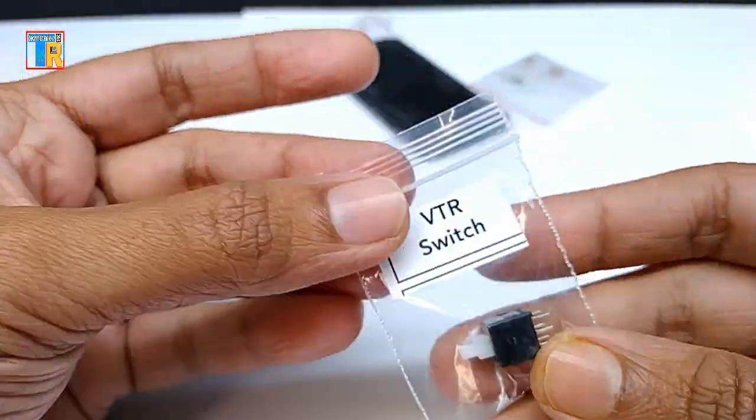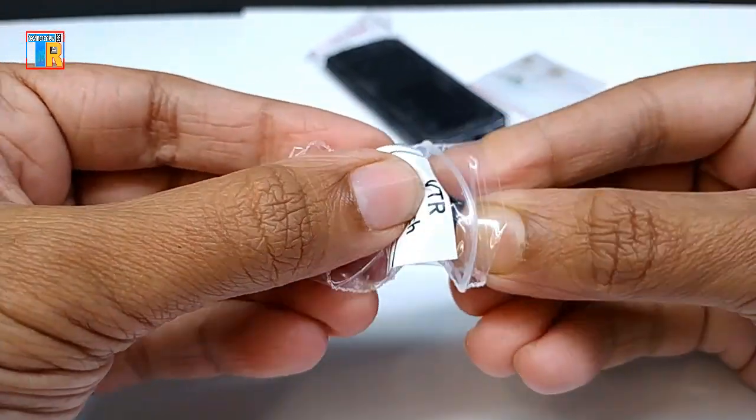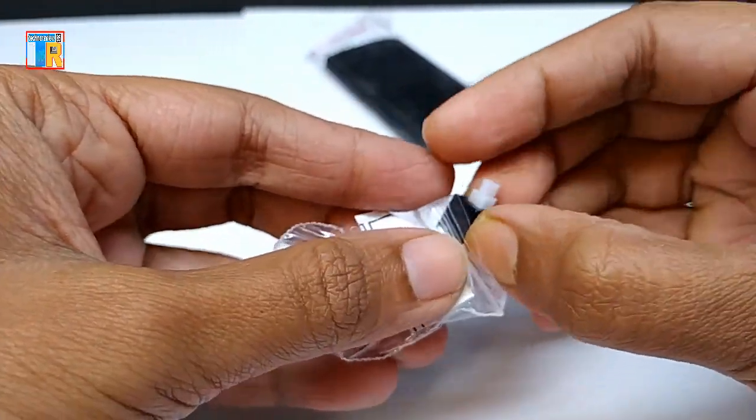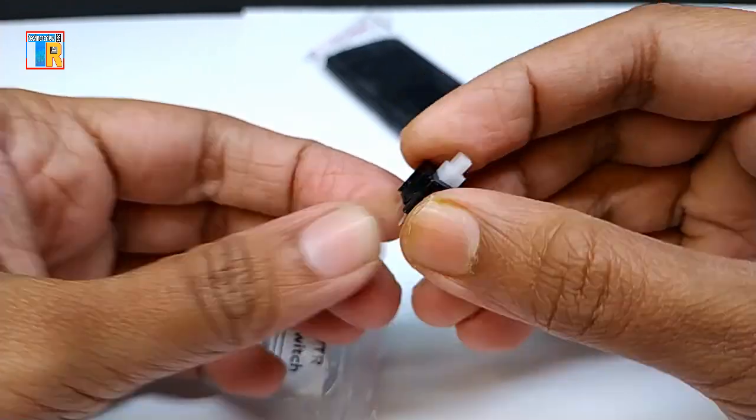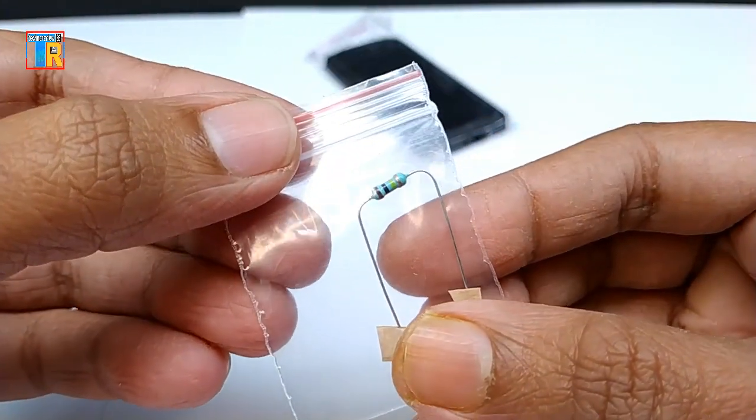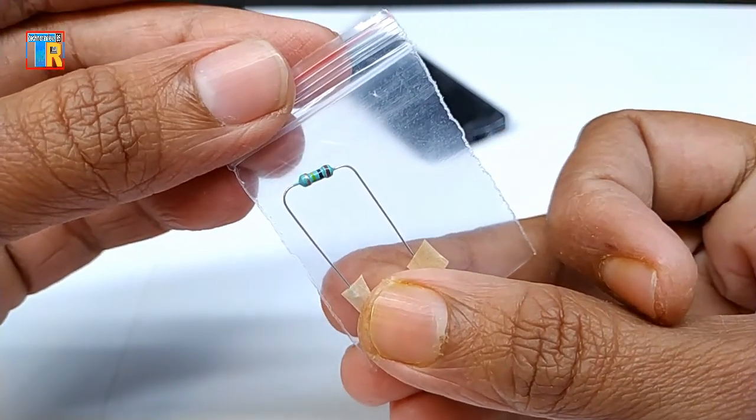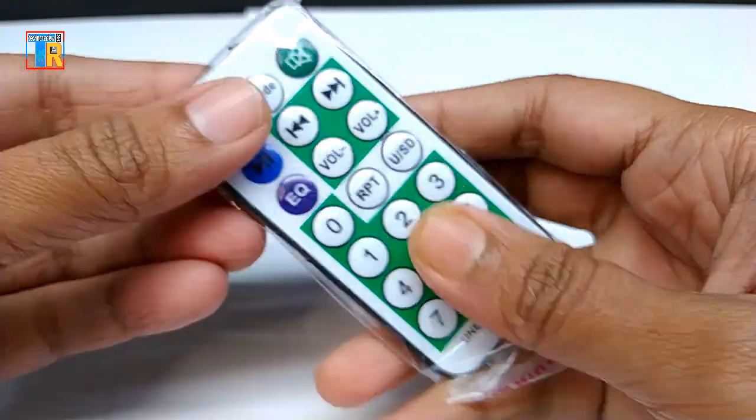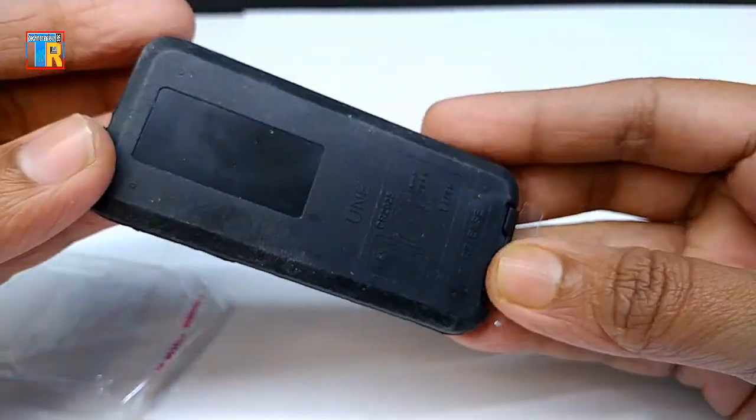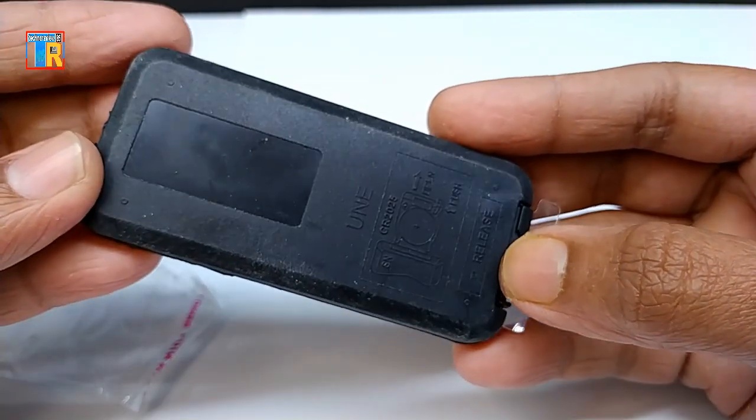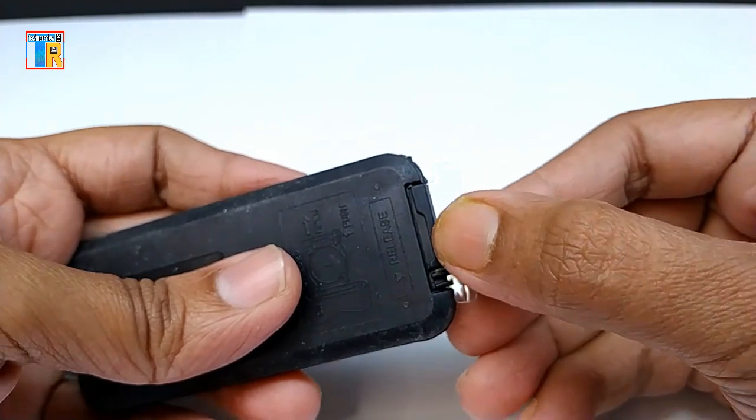VTR switch, resistor 100K, and a mini IR remote control. You have to remove the battery protector before using it.